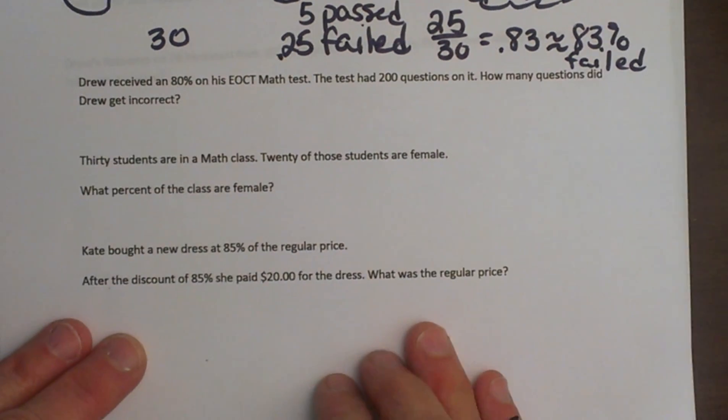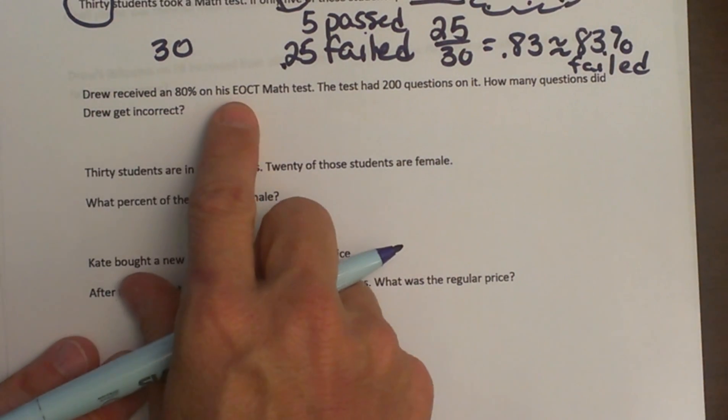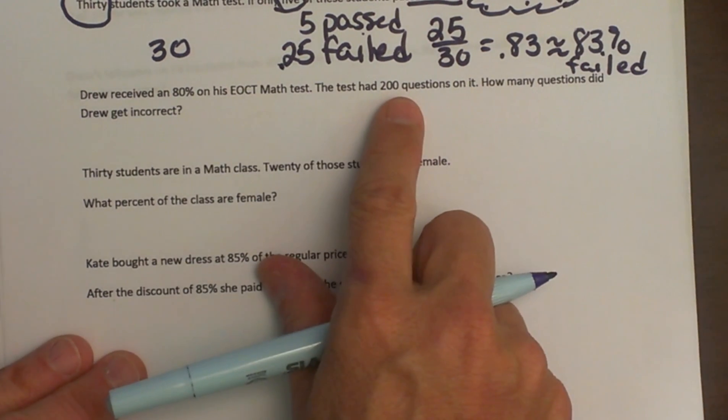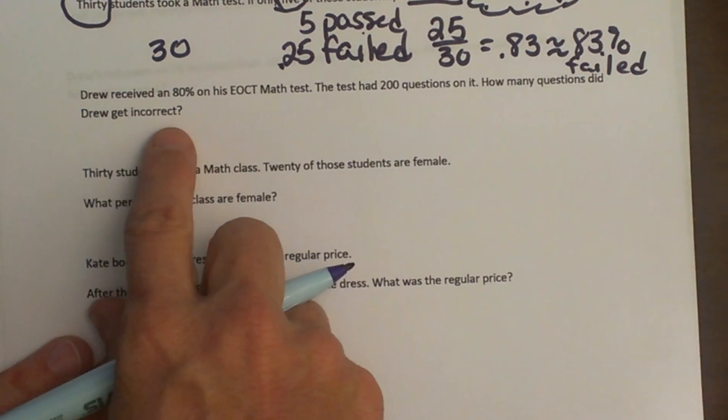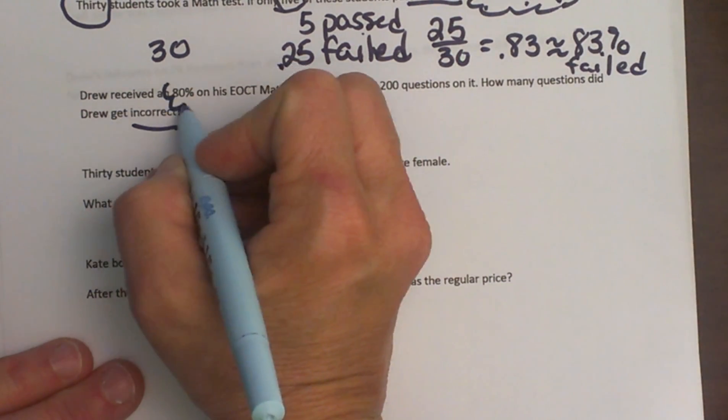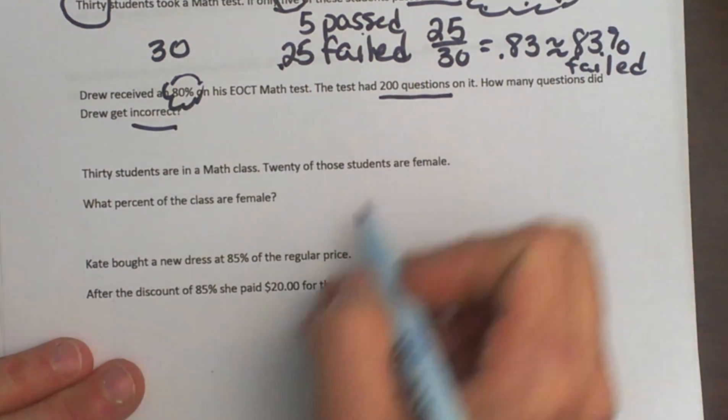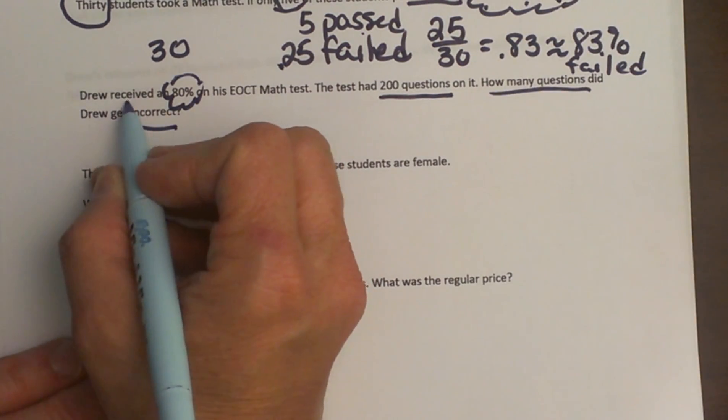Let's look at the second one. Drew received an 80 on his EOCT math test. The test had 200 questions on it. How many questions did Drew get incorrect? So let's circle some important information here. He got an 80 on the test. There were 200 questions. And the question is asking me how many did he get incorrect?